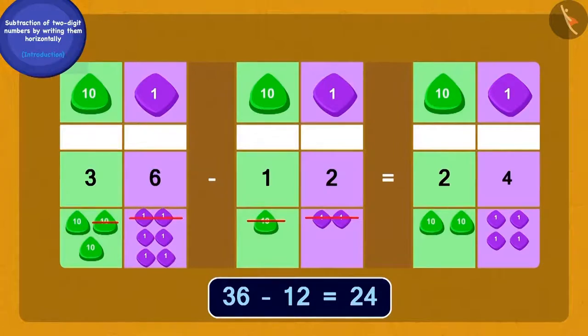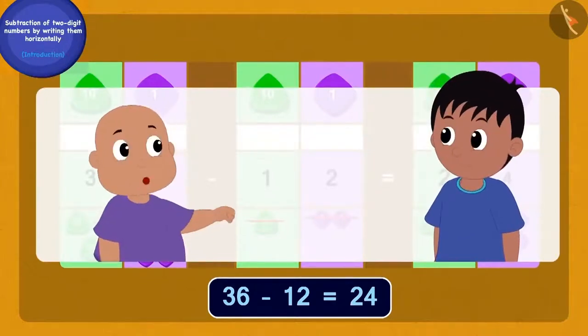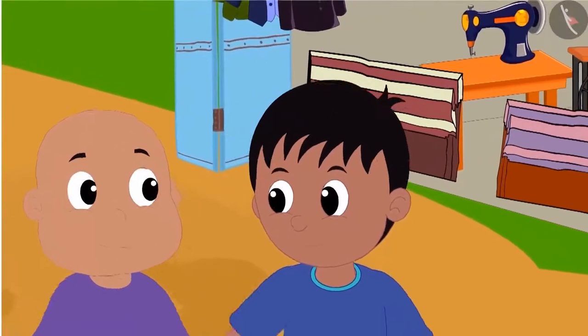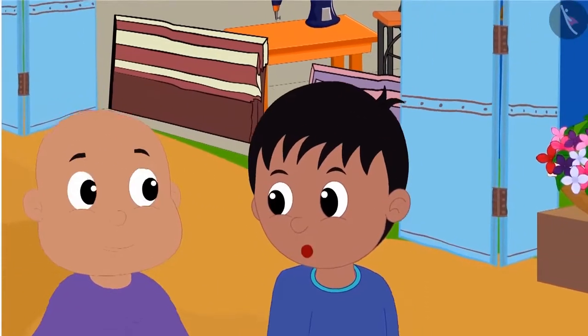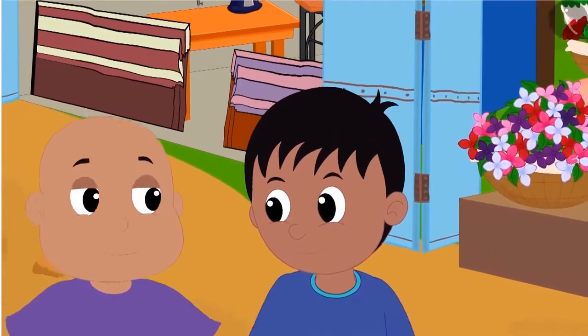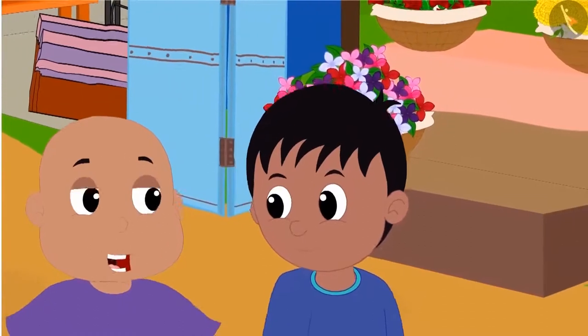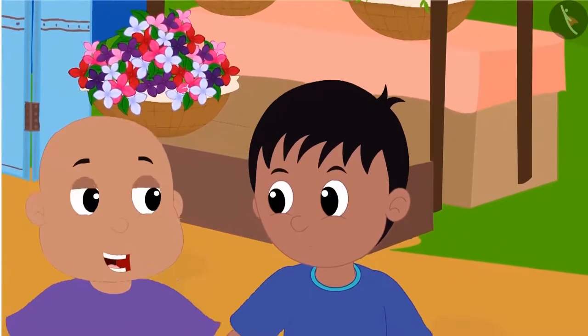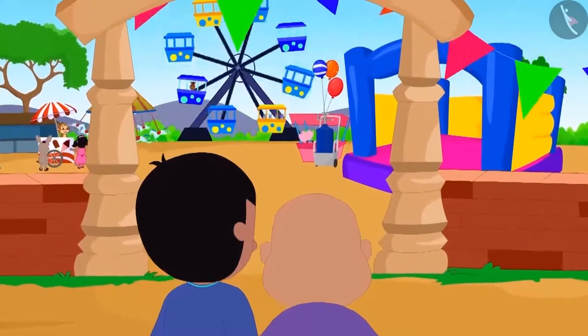Sher Khan had bought 24 jalebis from Appu. Bablu also explained the process of subtraction to Raju in exactly the same way. Raju became very happy. He said to Bablu, Bablu, I have understood. Now I will be able to solve the subtraction sums easily. If that's the case, then let us go to the fair and this time, why don't you solve some subtraction puzzles for me? Bablu said to Raju. Raju and Bablu went to the fair.